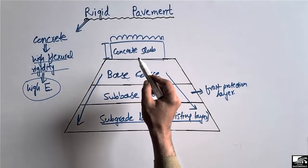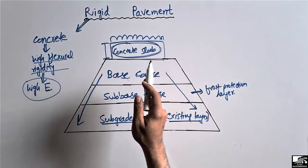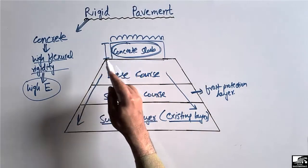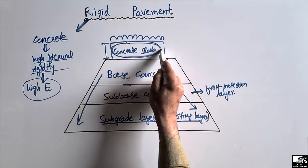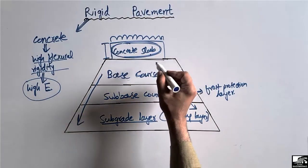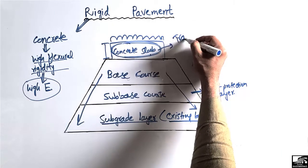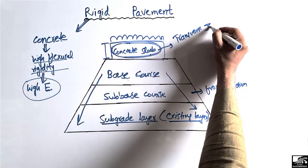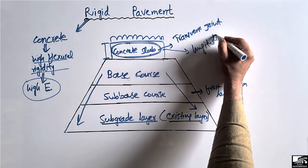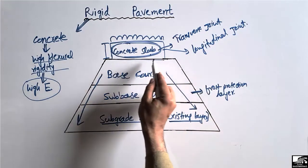The concrete slab is the material that differentiates the rigid pavement from the flexible pavement. In the case of flexible pavement, we don't need to provide any concrete material, but in the case of rigid pavement, we provide the concrete slab. The concrete slab should also be provided with two types of joints: one is called the transverse joint and the other is known as the longitudinal joint. These two joints are provided in the concrete slab in order to resist the thermal stresses in the slab.